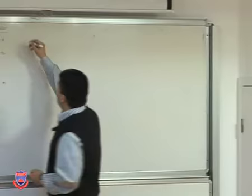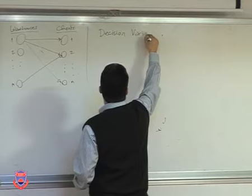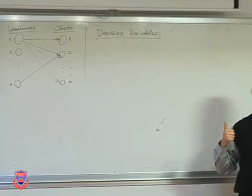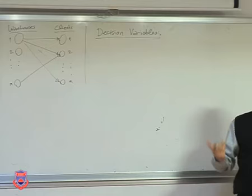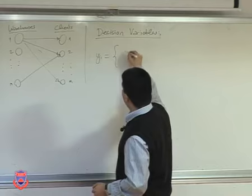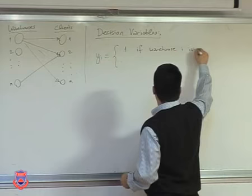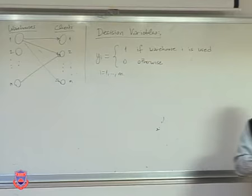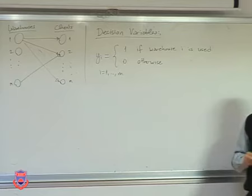Let's figure out our decision variables. The first decision — for a given warehouse, are we going to use it or not — is a yes/no decision, which can be modeled using a binary variable. I'll define yi, set equal to 1 if warehouse i is used and 0 otherwise. Since I have m warehouses, I'll have m such binary variables.